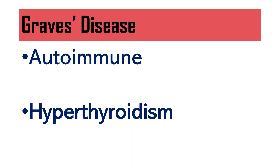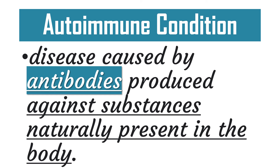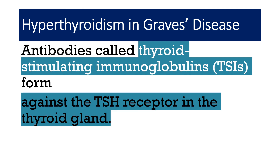Graves disease is an autoimmune condition that causes hyperthyroidism. An autoimmune condition is a disease caused by antibodies that are produced against substances which are normally naturally present inside the body. In hyperthyroidism due to Graves disease, antibodies called thyroid stimulating immunoglobulins are produced against the TSH receptor in the thyroid gland.